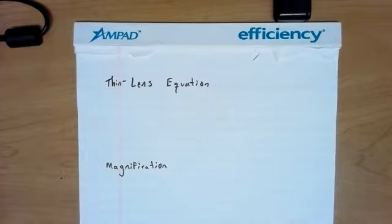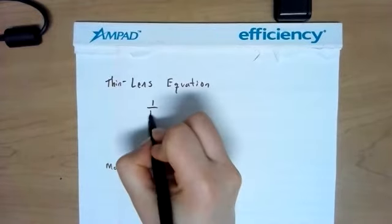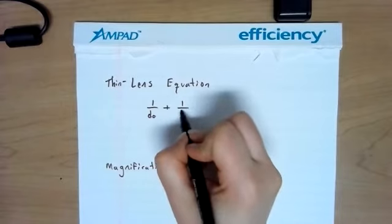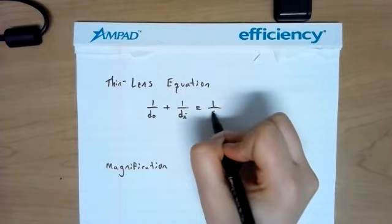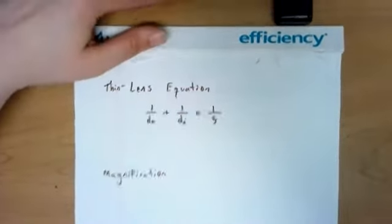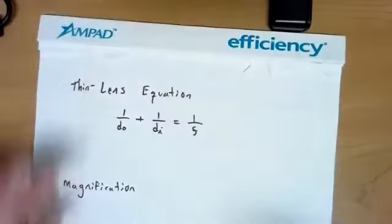And so the thin lens equation is a relationship between the distance from the lens that you find the object and that you find the image as related to the focal length. So it is one over DO plus one over DI equals one over F.